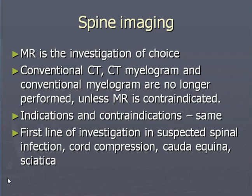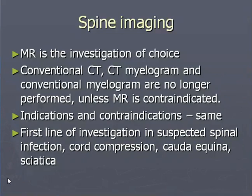Spine imaging — MR has a clear edge in spine imaging as compared to X-ray and CT. MR is the investigation of choice. Conventional CT, CT myelogram, and conventional myelogram are no longer performed unless MR is contraindicated for some other reasons. MR is the first line of investigation in suspected spinal infection, cord compression, cauda equina syndrome, and sciatica.